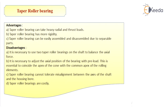Taper roller bearing has the following disadvantages. It is necessary to use two taper roller bearings on the shaft to balance the axial force. It is necessary to adjust the axial position of the bearing with preload, so that the apex of the cone coincides with the common apex of the rolling elements. It cannot tolerate misalignment between the axis of the shaft and the housing bore, and taper roller bearings are costly.